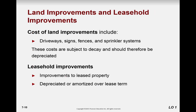For land improvements — such as driveways, signs, fences, and sprinkler systems — these can decay and therefore are depreciated, unlike land itself. Leasehold improvements improve a leased property and are depreciated over the lease term. Normally apartment leases last one year, but commercial leases are typically three to five years.